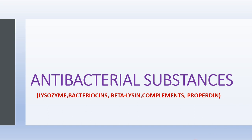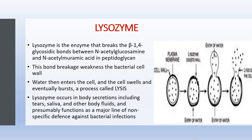Let's begin with the first one: lysozyme. Lysozyme is the enzyme that breaks the beta-1,4 glycosidic bond between N-acetylglucosamine (NAG) and N-acetylmuramic acid (NAM) in peptidoglycan. Peptidoglycan is the main composition of the bacterial cell wall. Once the bond is broken between NAM and NAG, water in the surrounding media enters into the cell, the cell swells, and eventually bursts — a process called lysis.